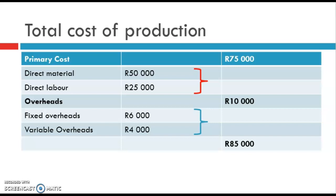Then you would have other overheads and expenses. These include the fixed overheads — for example, rent and electricity. Your variable overhead changes; you might use more water during a particular production stage, so that changes every time. The overheads here add up to 10,000 Rand. So in total, your total cost of production is 85,000 Rand.